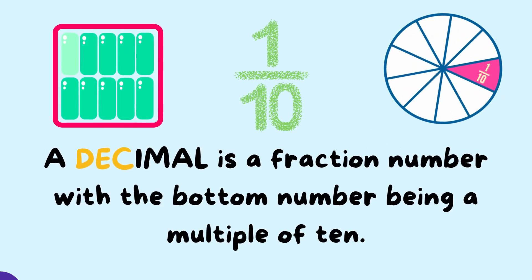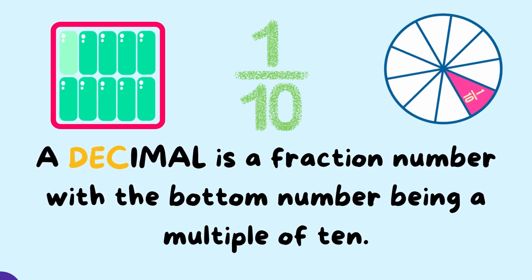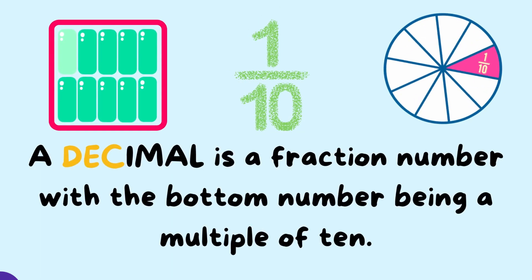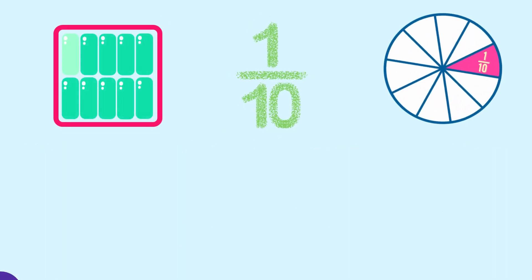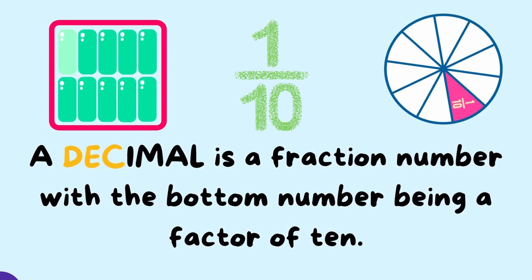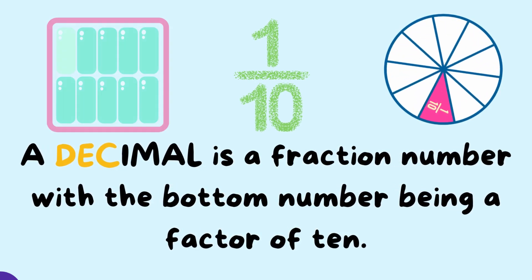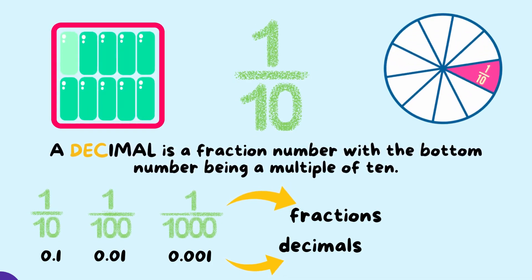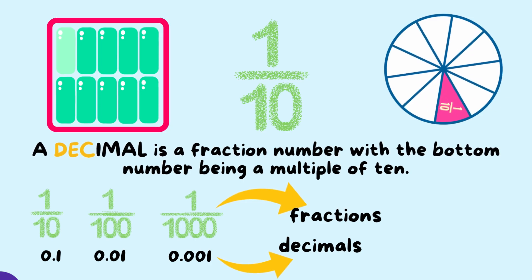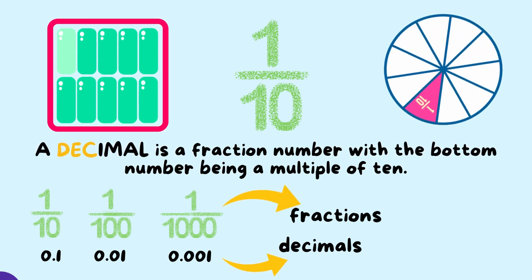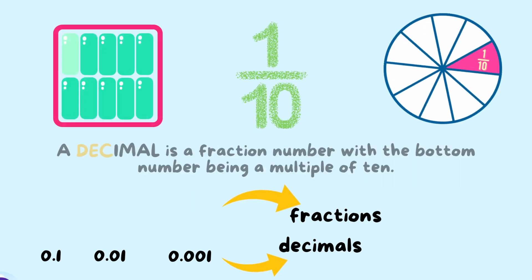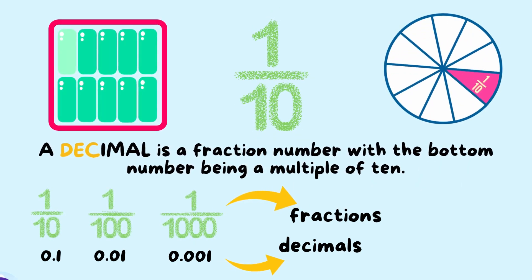A decimal is a fraction number with the bottom number — which is also called the denominator — being a multiple of 10. For example, a fraction that is written as 1 over 10 can also be written as a decimal. A decimal is related to the number 10 because the number is always being divided by 10, or a multiple of 10.